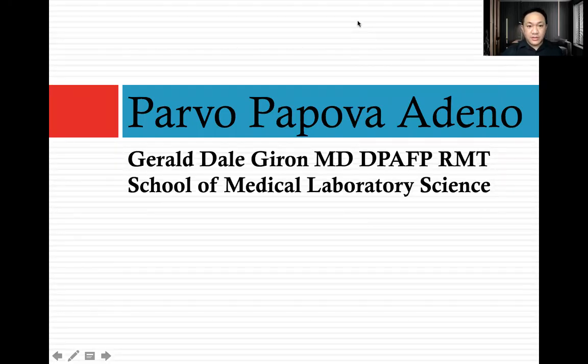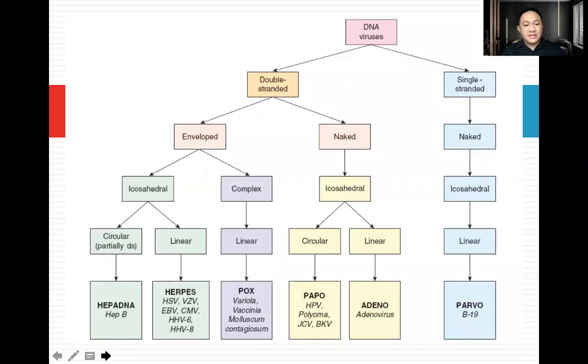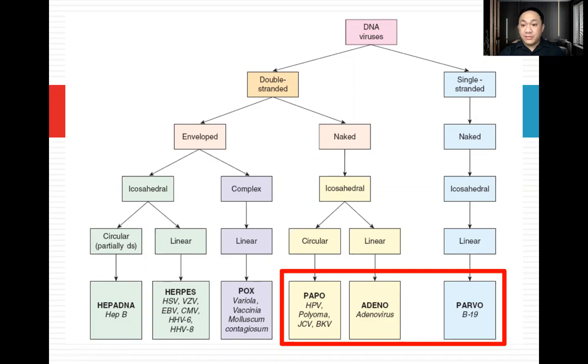Good day, everyone, and welcome to the second lecture of Fair Midterms. For this week's topic, our topic would be parvovirus, papovavirus, and adenovirus. From last week's lecture, it was purely RNA. For this week's topic, it's all about DNA viruses — the papova, the adenovirus, and the parvovirus. Let me just show you what are the general characteristics of one from the other.